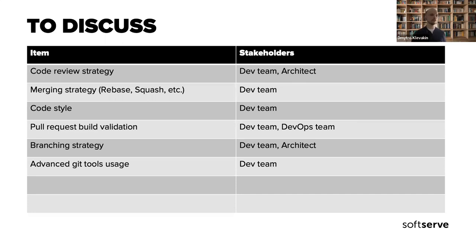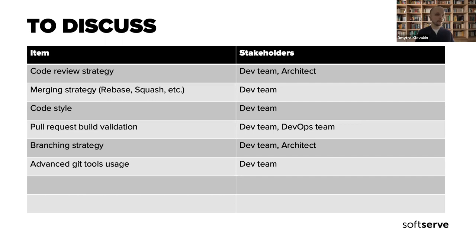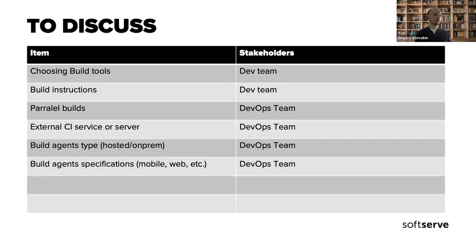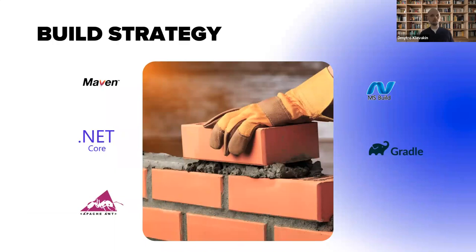For example, advanced Git tools usage — that might be semantic versioning or other tools you might integrate into pipelines. These are topics we need to think about in advance, check with the relevant and responsible people, validate, state them, and then go deeper into the design of other aspects of the pipeline.